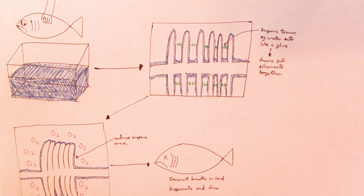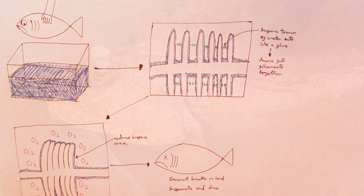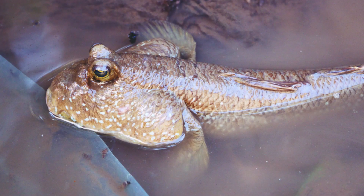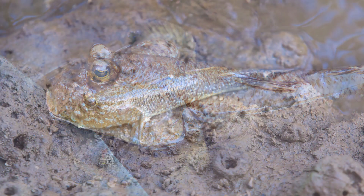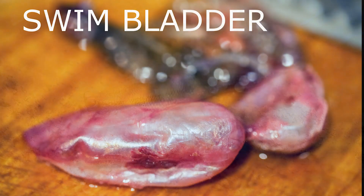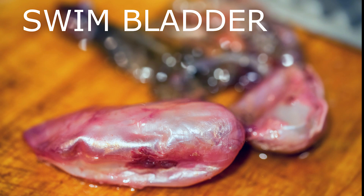However, there are exceptions to the rule. Some fish, known as mudskippers, actually come up onto land and spend time walking about above the surface of the water. These fish are able to breathe above water by taking in oxygen through their mouth and using an organ known as a swim bladder like a lung.